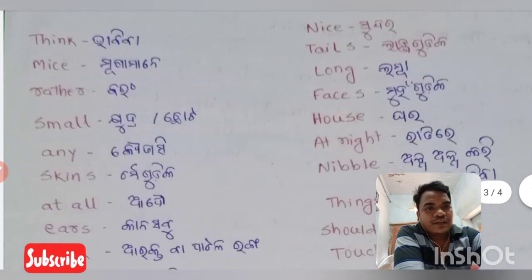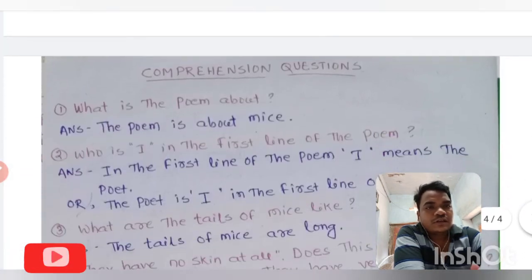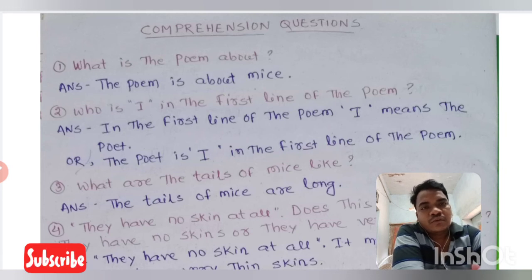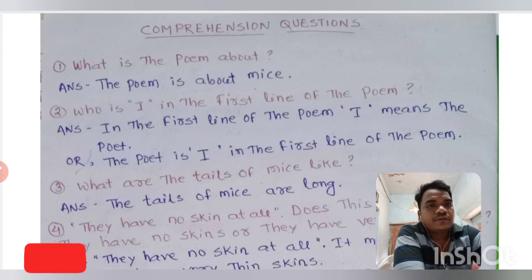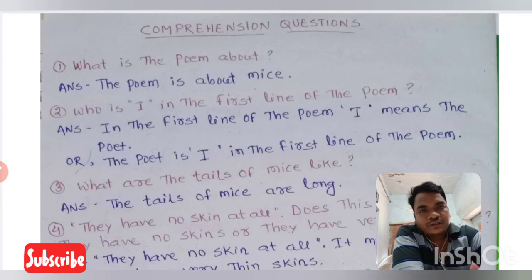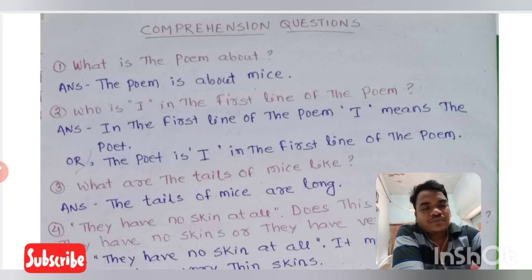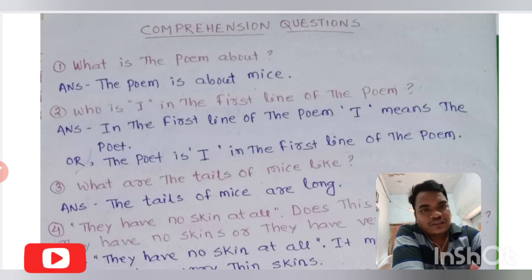Now we discuss the comprehension of this poem, lesson number 1. Our first question: what is the poem about? The answer is: the poem is about mice. Second question: who is 'I' in the first line of the poem? We discussed this — 'I' refers to the poet.